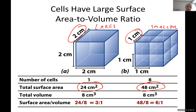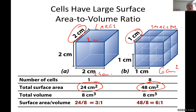For the 1 cm cell, the surface area is 1×1 = 1 cm² per face times 6 sides = 6 cm². For the 2 cm cell it is 2×2 = 4 cm² per face times 6 sides = 24 cm². So the 2 cm cell has 24 cm² and the 1 cm cell has 6 cm² surface area.